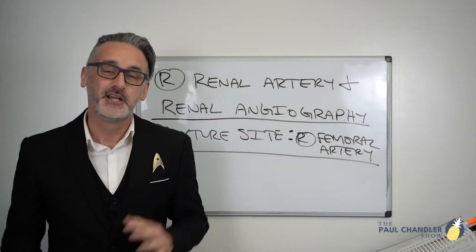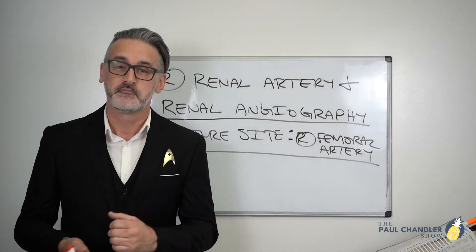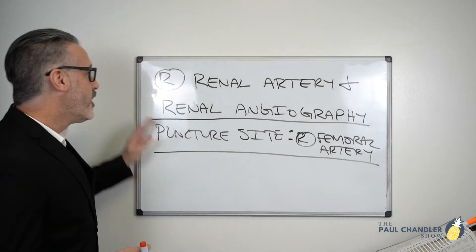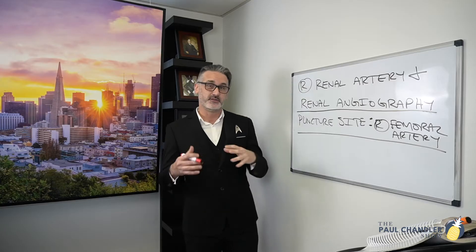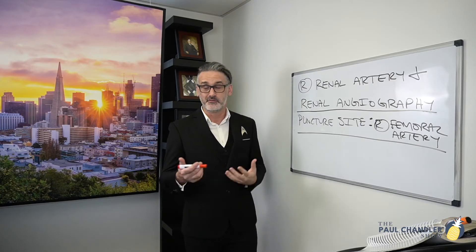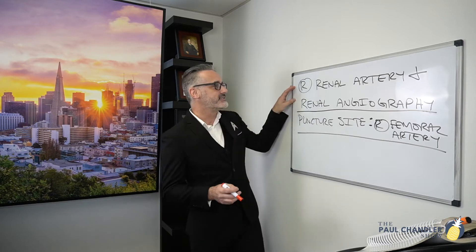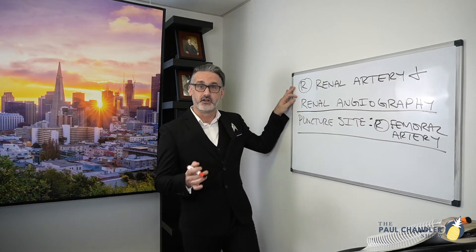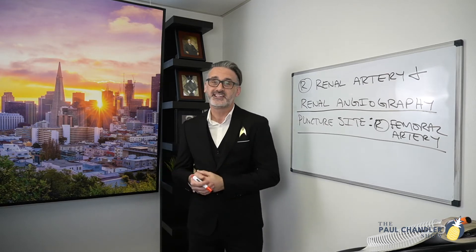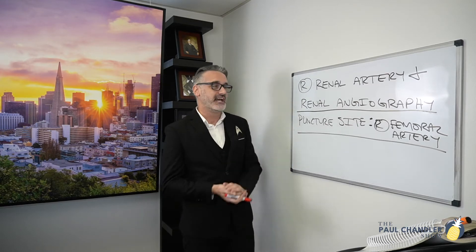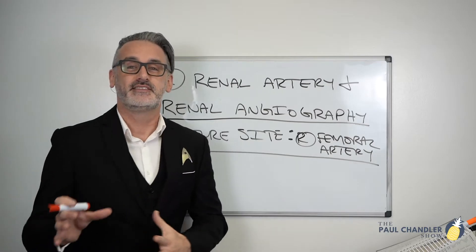Welcome back everyone. Tonight we're working through an example of selective catheterization. In this case we're going to be doing a selective catheterization on the right — R inside the circle means right, L inside the circle means left. We'll be doing it on the right renal artery, also performing a renal angiography. The puncture site in this case was done in the right femoral artery. So let's look at the CPT book.